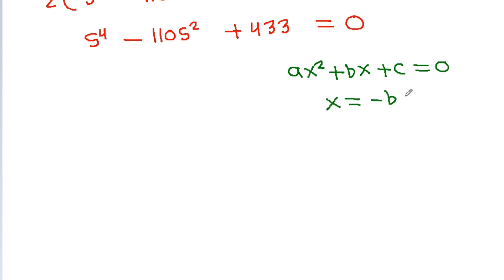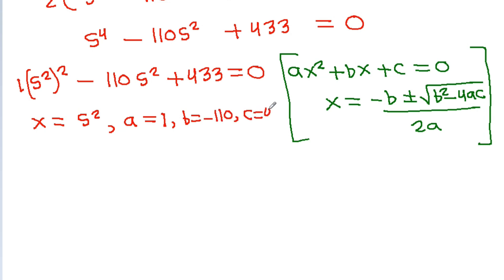Using the quadratic formula for ax squared minus bx minus c equals 0, where x equals minus b plus or minus square root of b squared minus 4ac, divided by 2a. Here, treating x as s squared: s to the power 4 minus 110s squared plus 433 equals 0. So a equals 1, b equals minus 110, and c equals 433.